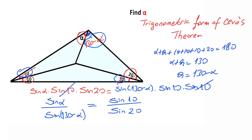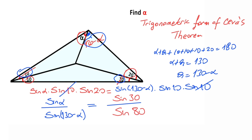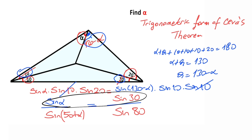We know that sine 20 expands as 2 times sine 10 times cosine 10. So sine 10 cancels, leaving 1 over 2, which can be written as sine 30. Also, cosine 10 equals sine 80, and since the sines of supplementary angles are equal, we can write sine(50 plus alpha) instead of sine(130 minus alpha). From this, we can see easily that alpha is going to be 30 degrees.